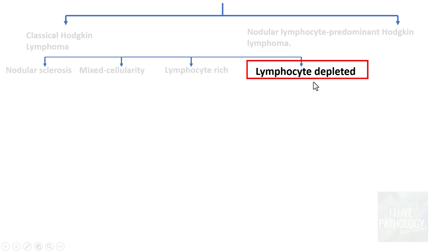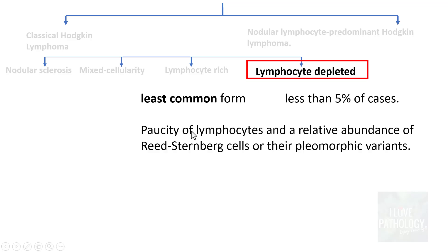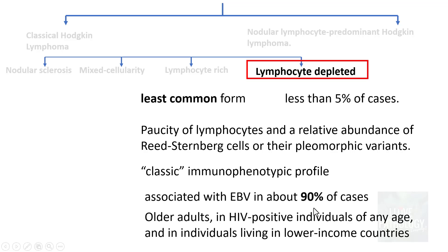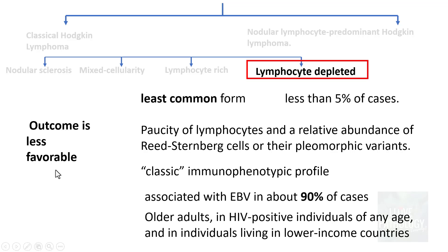The last classical Hodgkin lymphoma variant is lymphocyte-depleted — the least common, accounting for less than 5% of cases. It features paucity of lymphocytes and a relative abundance of Reed-Sternberg cells, particularly the pleomorphic variant. It is associated with EBV in around 90% of cases and is found in older adults, HIV-positive individuals of any age, and individuals in lower-income countries. The prognosis is less favorable compared to other Hodgkin lymphoma subtypes.